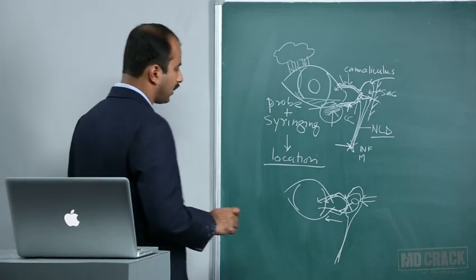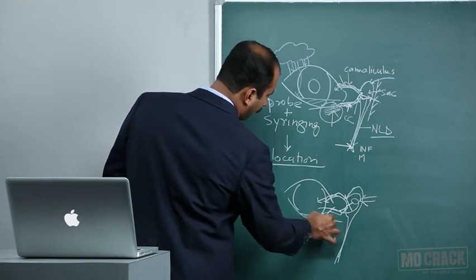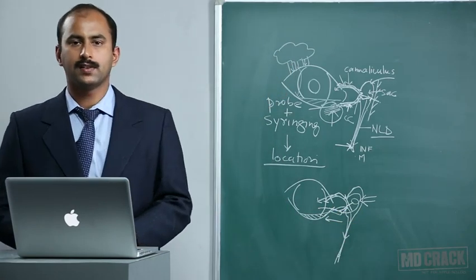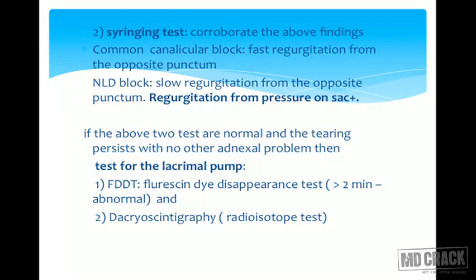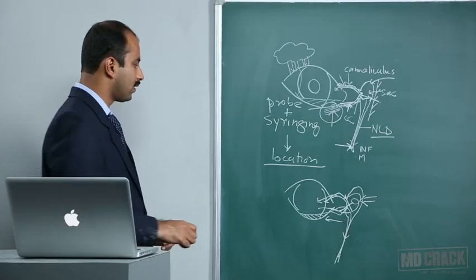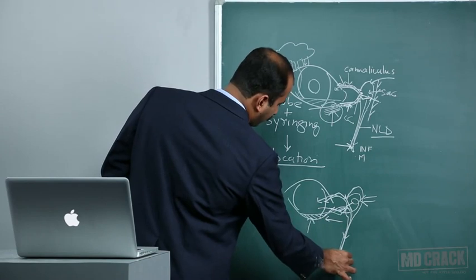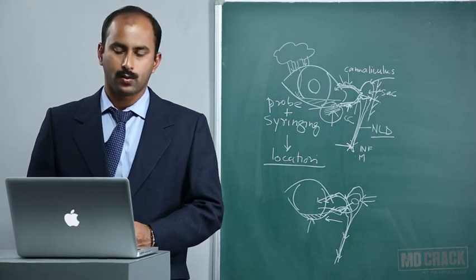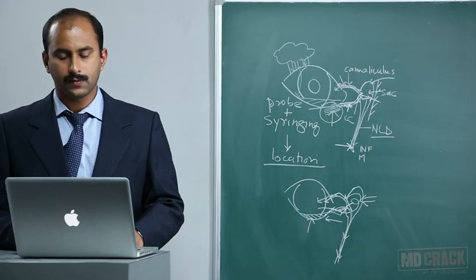The two tests for lacrimal pump function are the fluorescein dye disappearance test (FDDT) and dacryoscintigraphy. In the FDDT, a drop of fluorescein is instilled in the conjunctival cul-de-sac and the time for disappearance into the canalicular system is noted. Greater than 2-3 minutes is considered abnormal. If FDDT findings are inconclusive, dacryoscintigraphy uses a radioisotope instilled in the cul-de-sac, and a gamma camera measures activity as it passes down the lacrimal passages to identify the site of block.